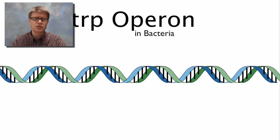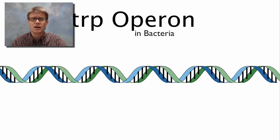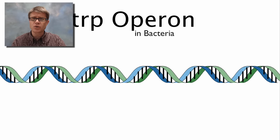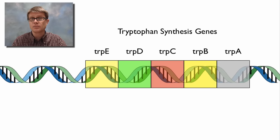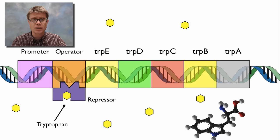Before the simulation, I want to talk about the trp operon, which does essentially the opposite. The trp operon evolved in bacteria to deal with tryptophan — or more specifically, to deal with the absence of tryptophan. Tryptophan is an amino acid required to make proteins; it's one of the 20 essential amino acids. The trp operon is basically designed to make tryptophan if it's not present.